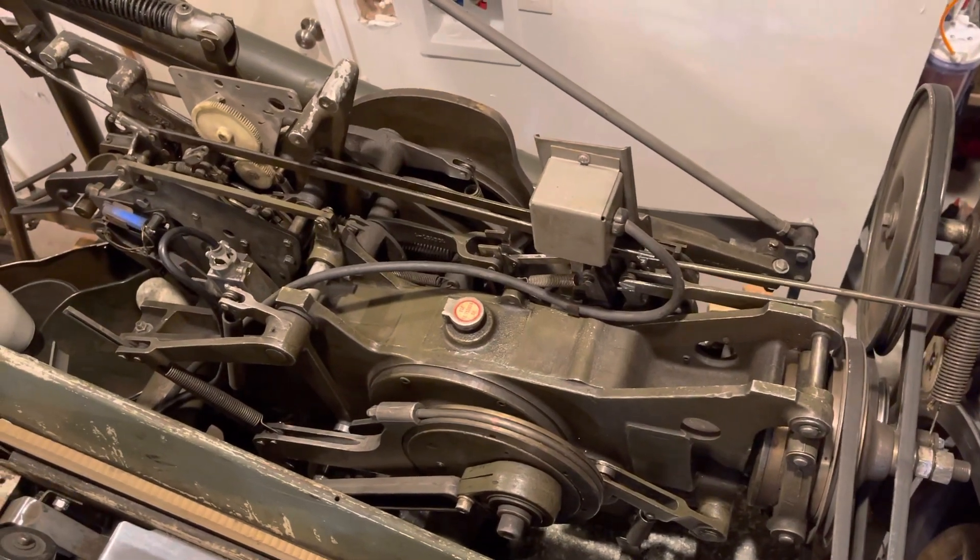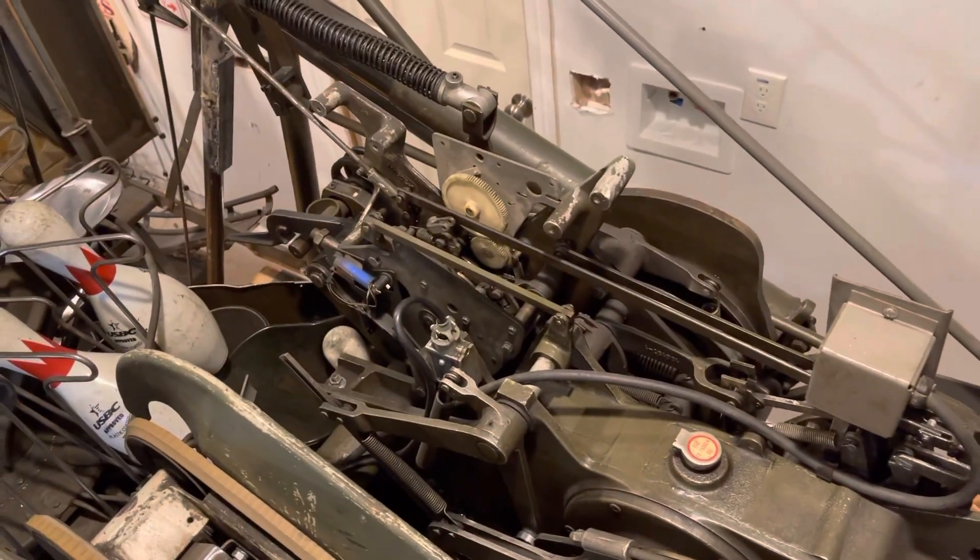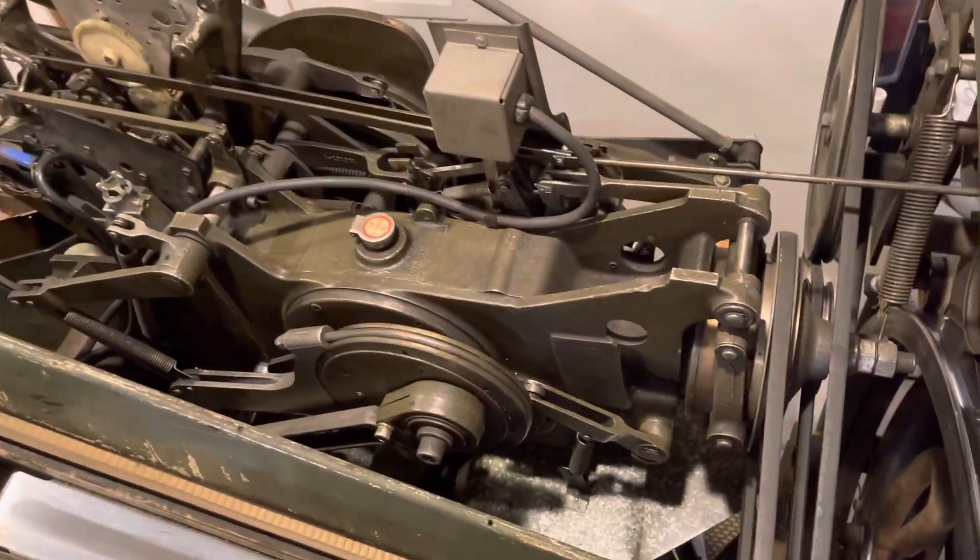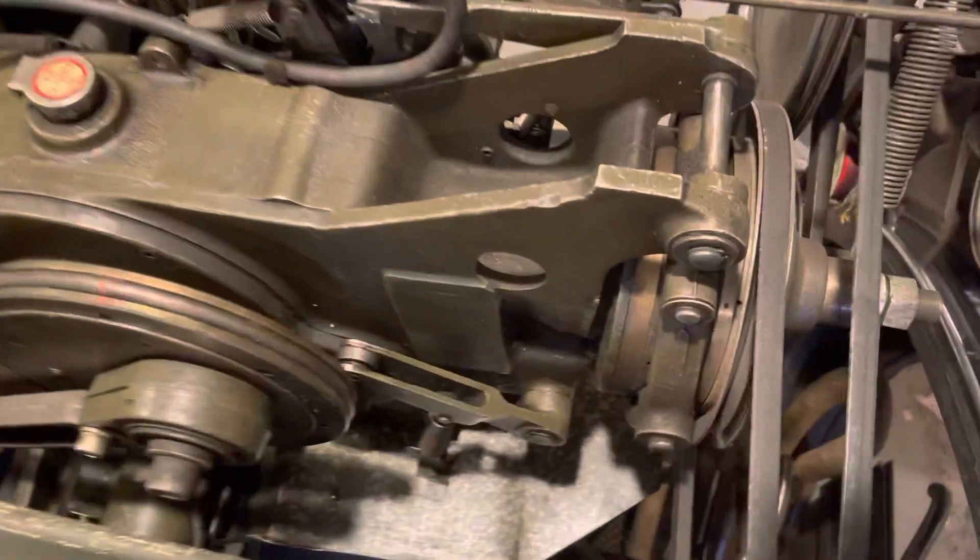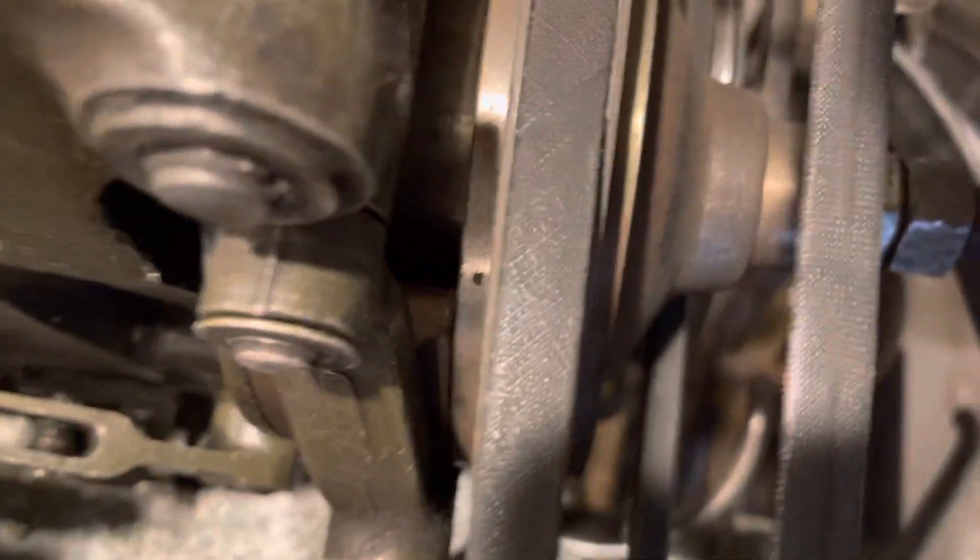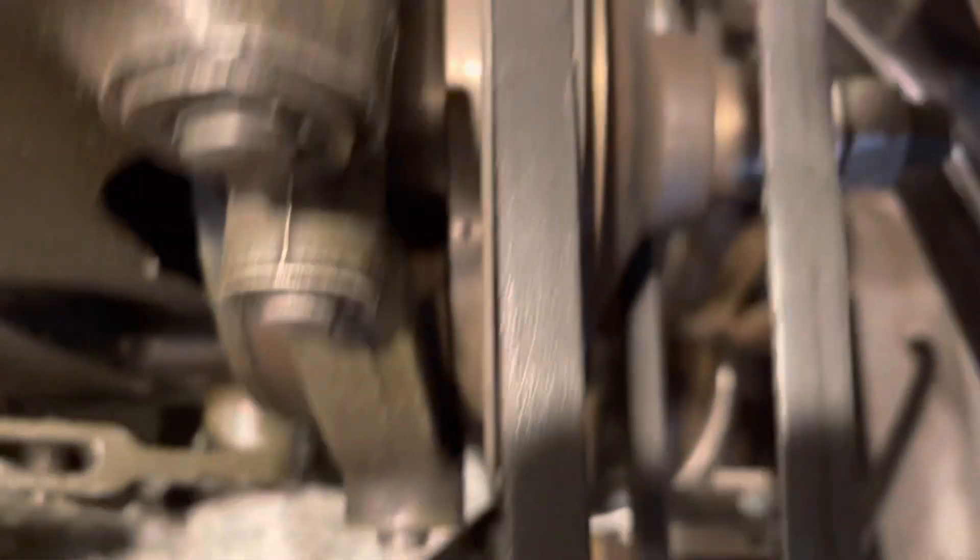The gearbox that you see here consists of the one-to-one, two-to-one, four-to-one detector assembly. There's linkages everywhere going off to do certain things. Right here on the back, there is a clutch assembly.